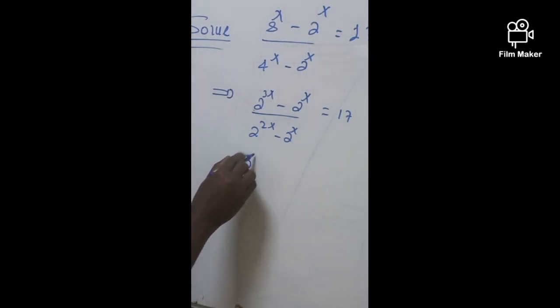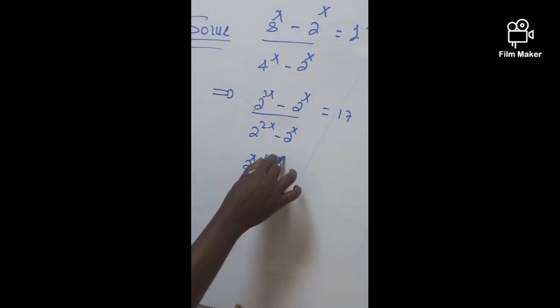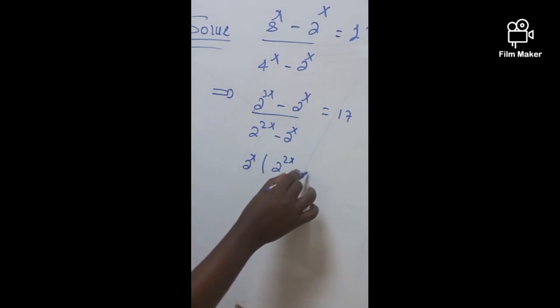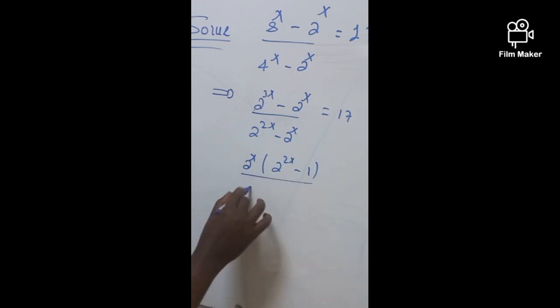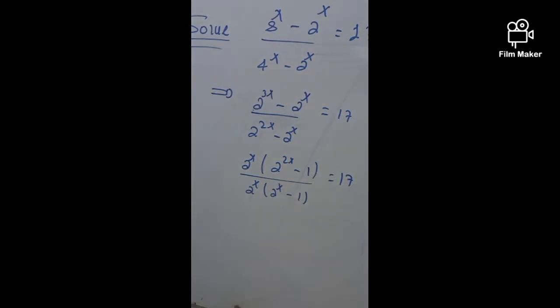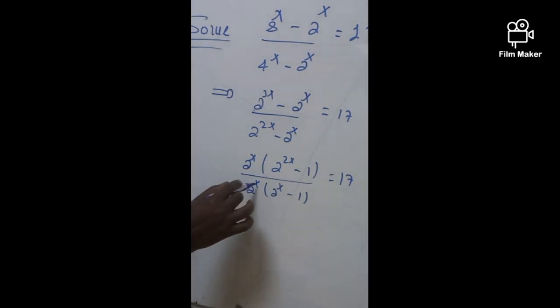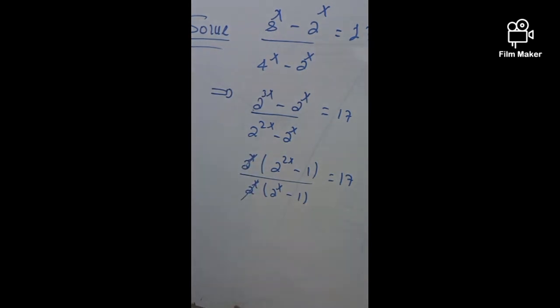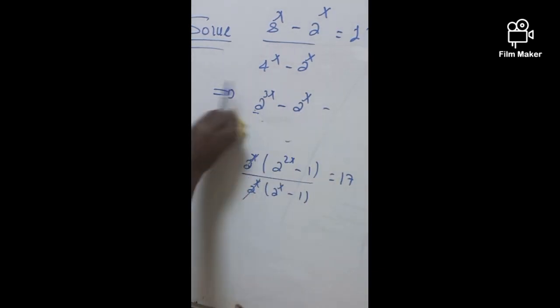This implies that it is going to be (2^x)(2^(2x) - 1) / (2^x)(2^x - 1) = 17. Now from here you can eliminate this by this, and we'll get (2^(2x) - 1) / (2^x - 1).